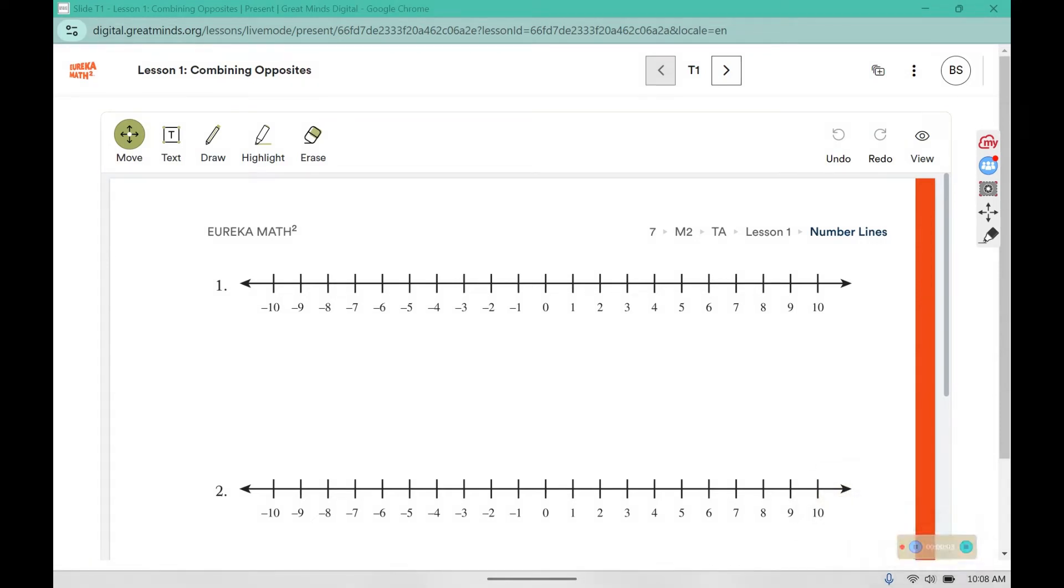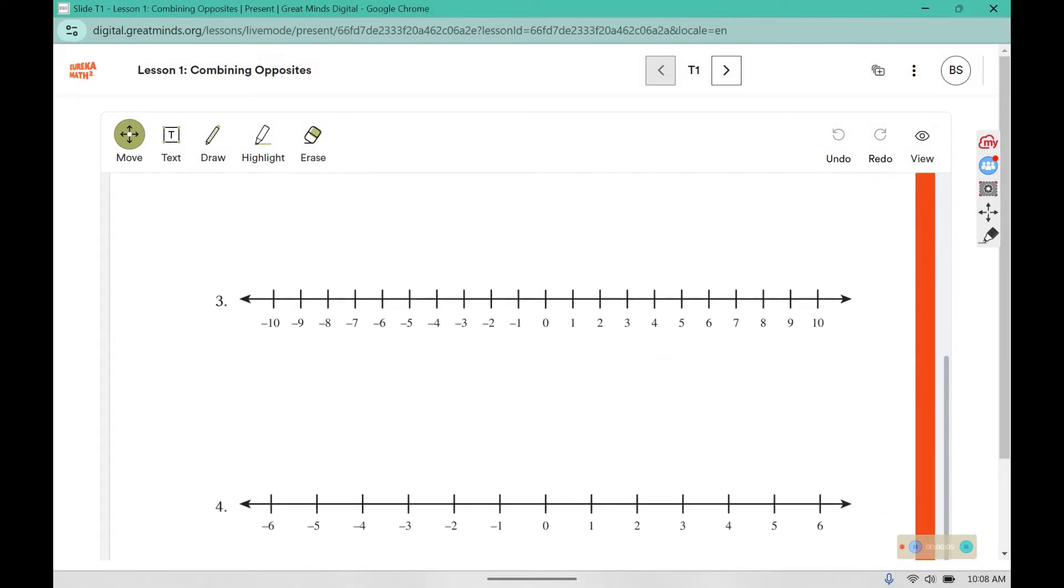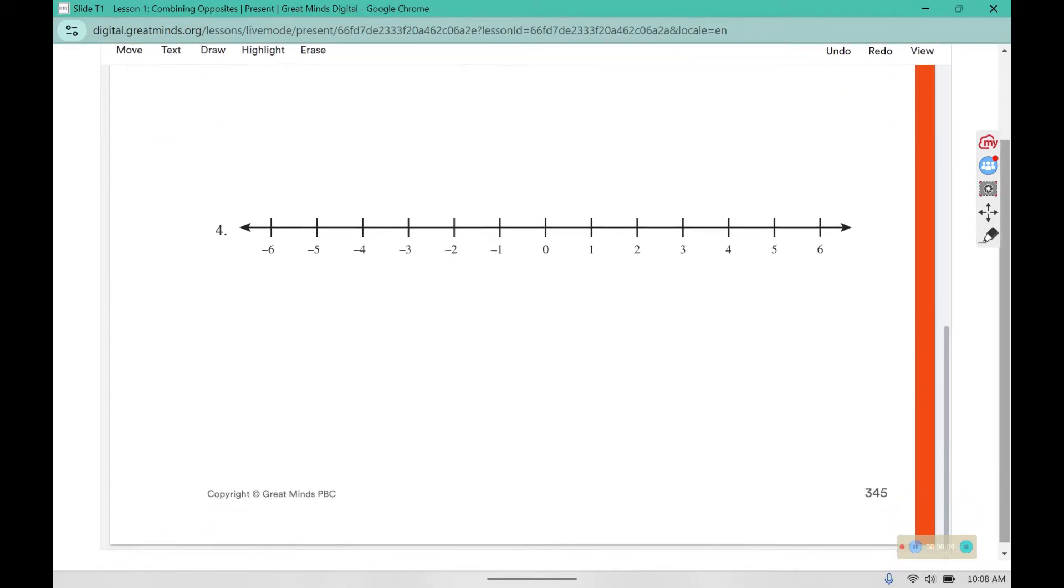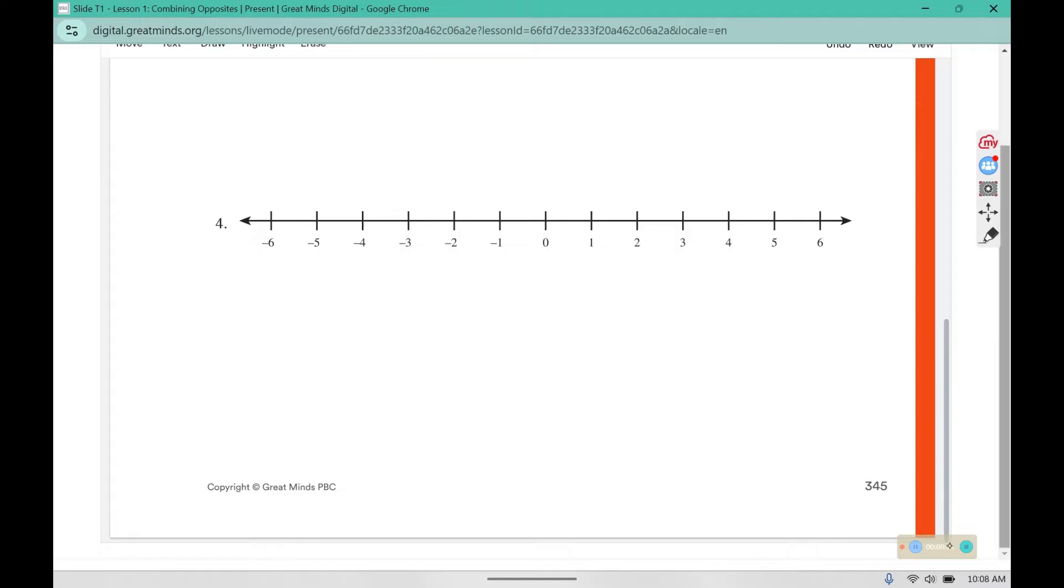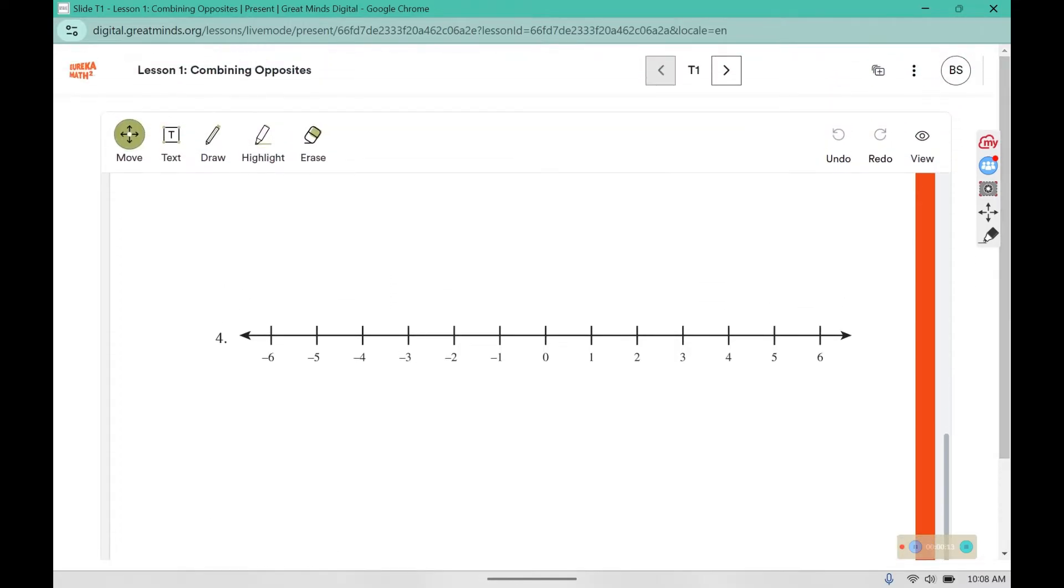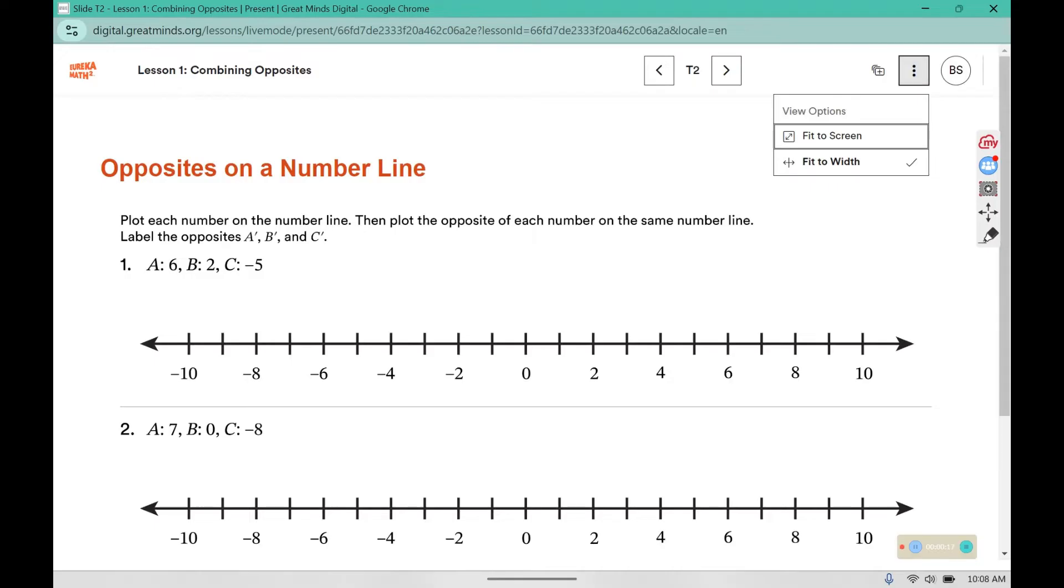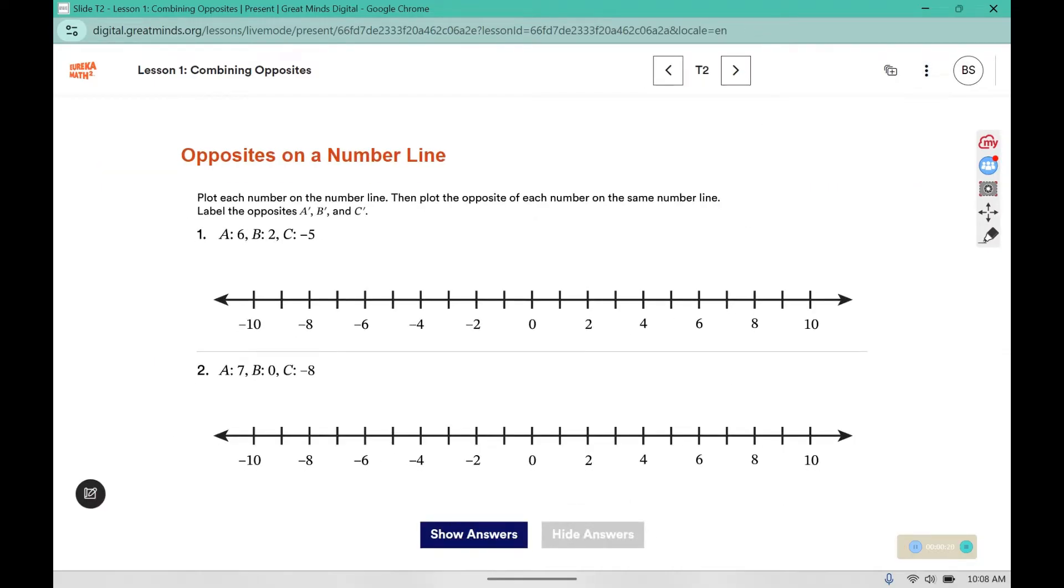Instead of completing today's warm-up in your composition book, you will be using the number lines found in your book on page 345. Turn in your workbook to page 345, and then you are going to plot each of these points and their opposites on the number line, and you will label the opposites a prime.